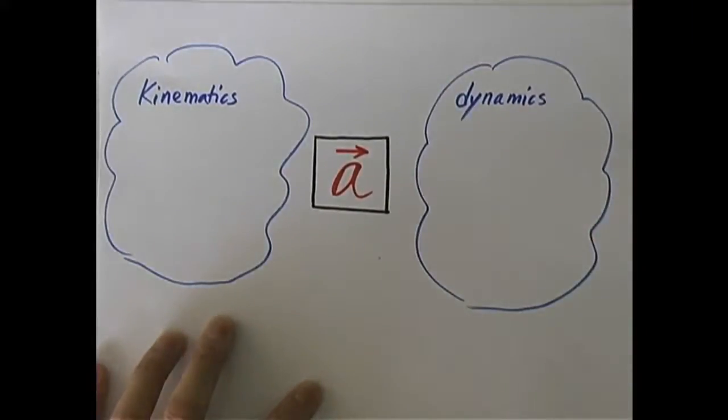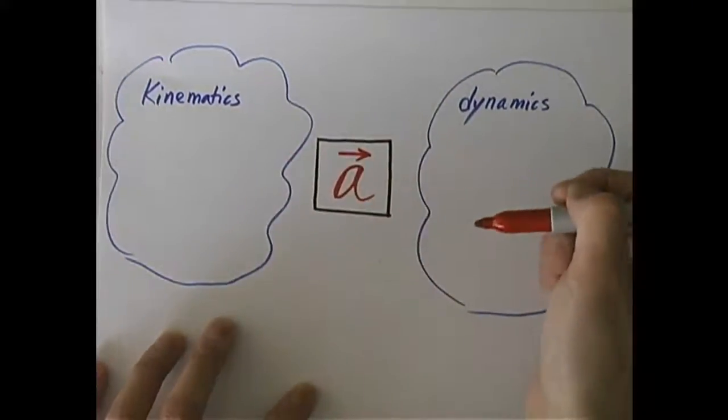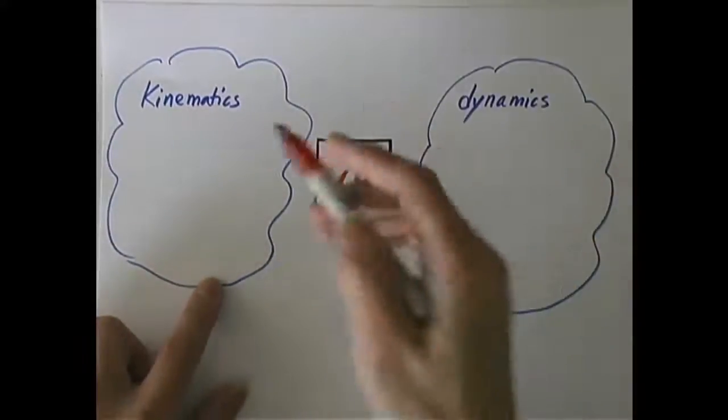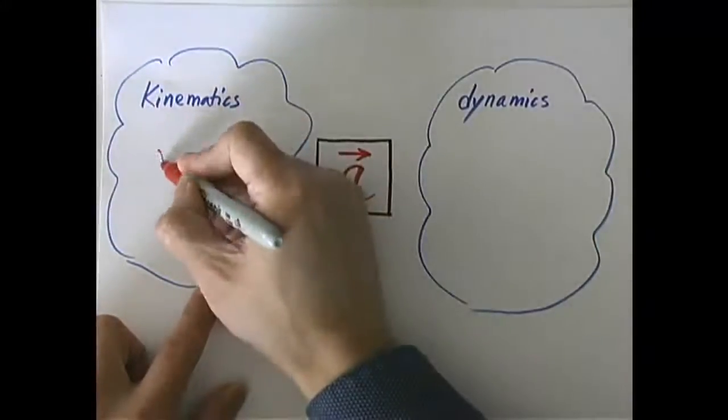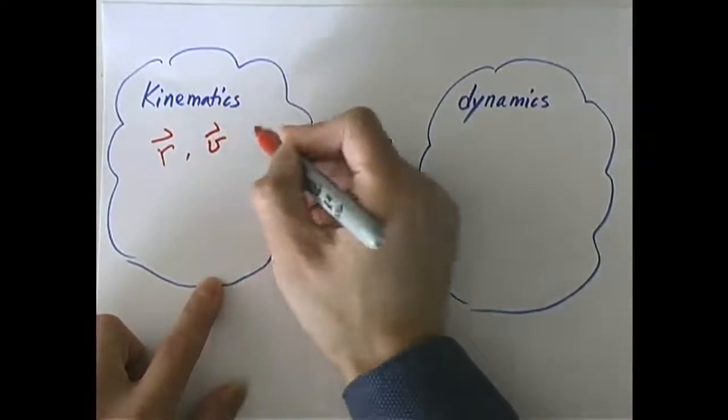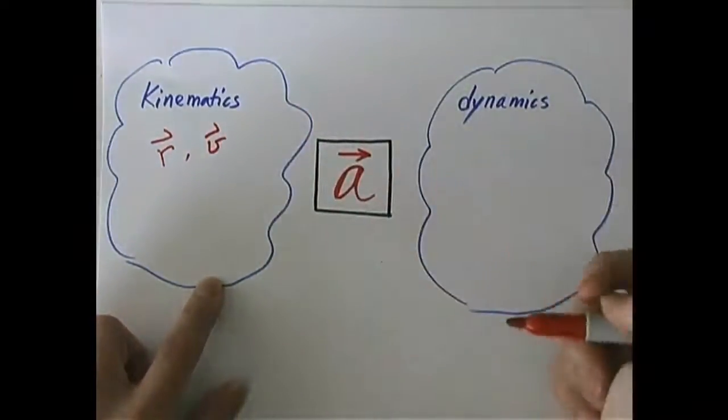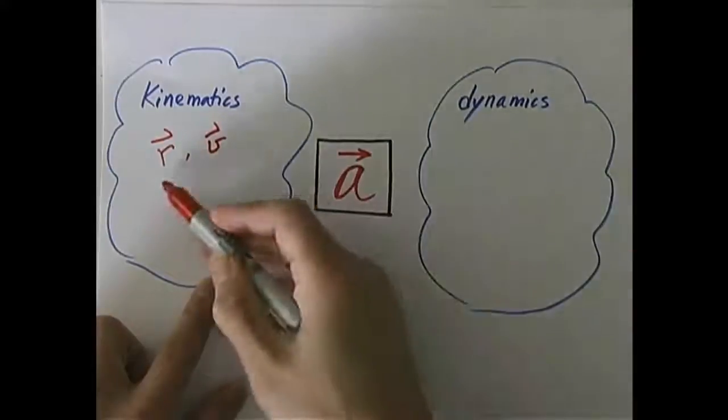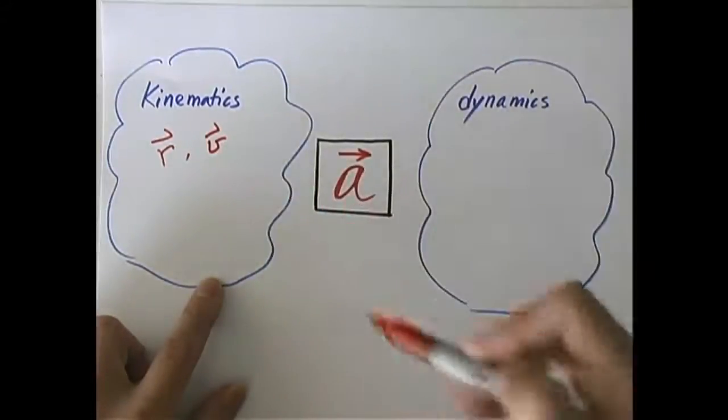Now we know kinematics deals with the description of motion. We're looking for R, looking for V, and so forth. Of course, we're also looking for A. We know where it is, how fast it moves, in what direction, whether it's accelerating or decelerating.